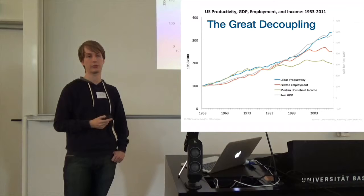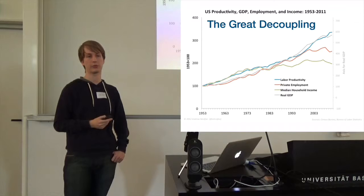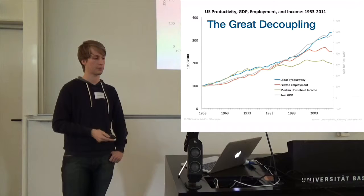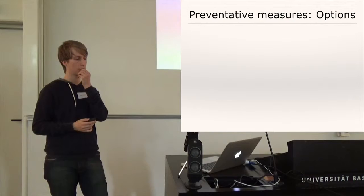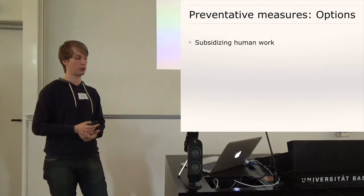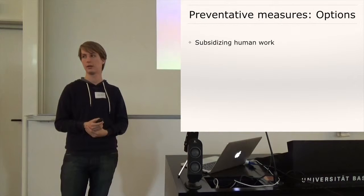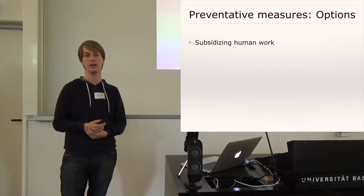money and goods are more important in terms of people's well-being if the person is poor, than if the person already has millions of dollars. And so, it makes sense to look into preventative measures, into options how we could combat this social inequality somehow, and measures that have been proposed. One is to subsidize human work, so even if it would pay for an employer to employ a machine, to do it for free basically, maybe they should still pay humans to do it, and they would get money from the government to have humans work there.